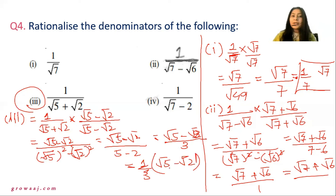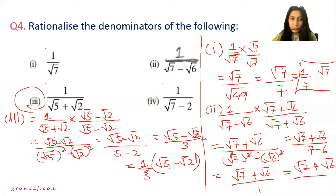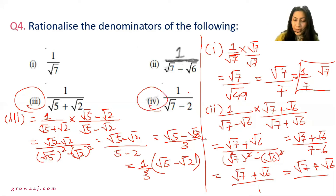So this is how we solve and rationalize the denominator. Question number 4 part 4 is also similar — you can do it on your own.